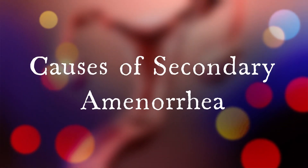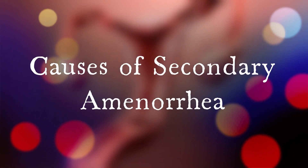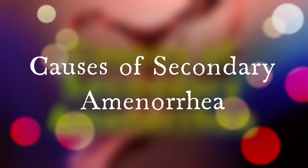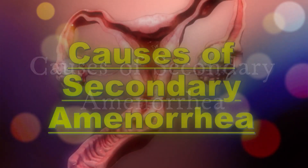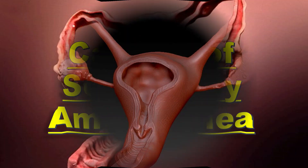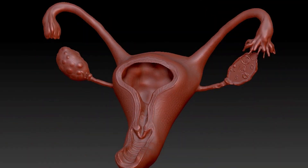Today we will discuss the causes and differential diagnosis of secondary amenorrhea. Secondary amenorrhea refers to the absence of 3 or more periods in a row by someone who has had periods in the past. What are the causes of secondary amenorrhea?